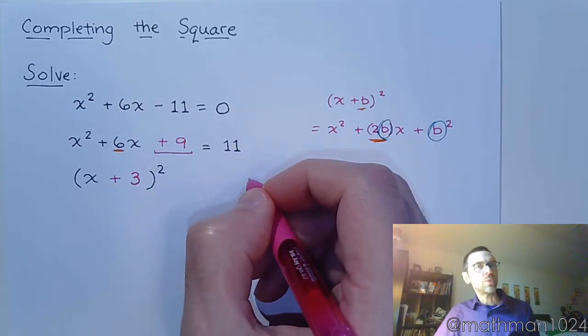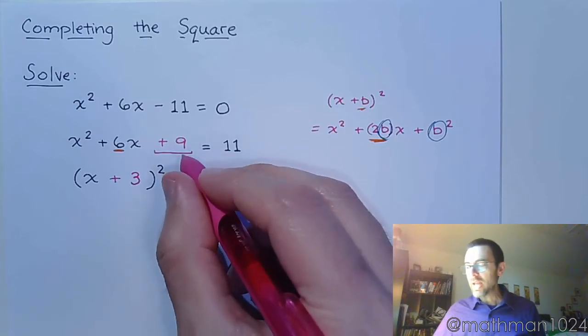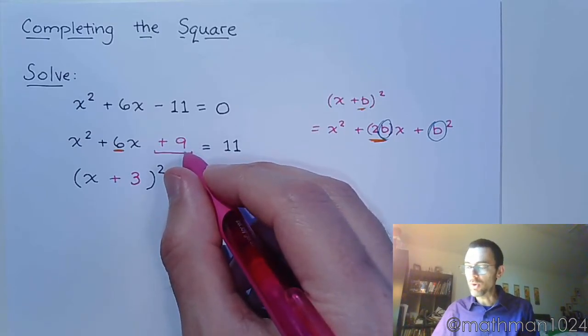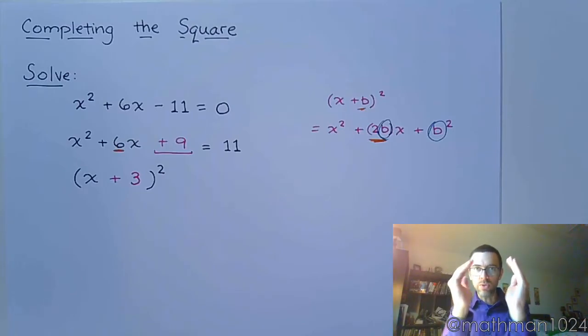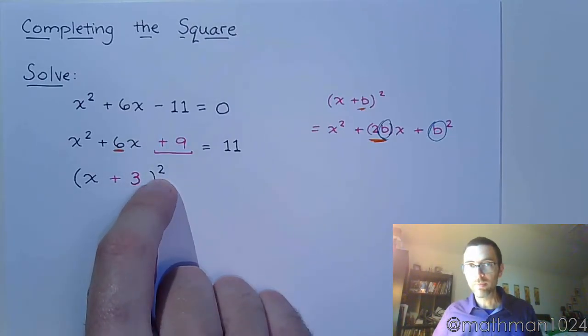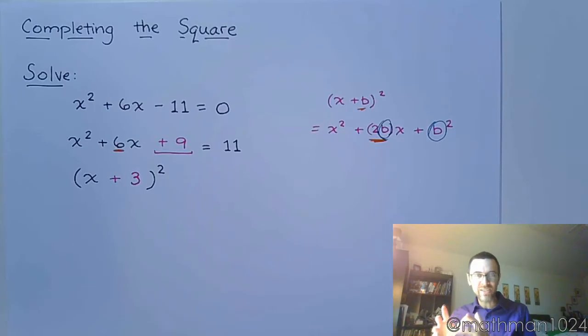Now I want you to notice what's happened here. I added 9 on the left side of the equation and by adding on the left side that allows me to have a polynomial that factors. And how would you factor this? Well you'd factor those x + 3 times x + 3, the exact same two factors which go together to give you the square.